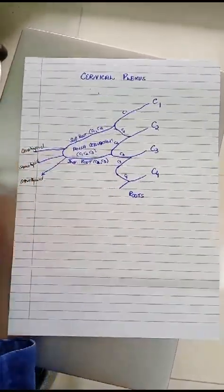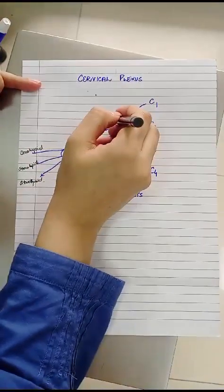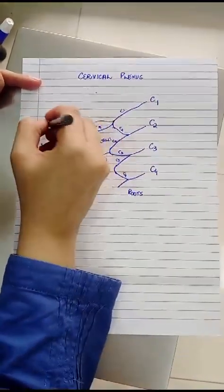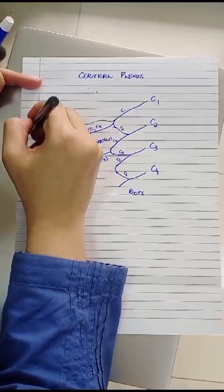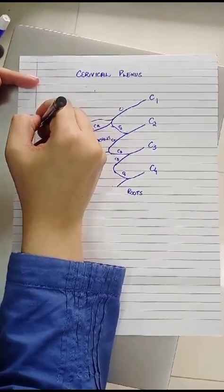The fourth infrahyoid muscle, thyrohyoid, gets its motor supply separately from C1. So this nerve to thyrohyoid is C1 in origin.